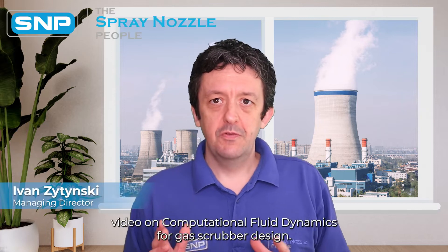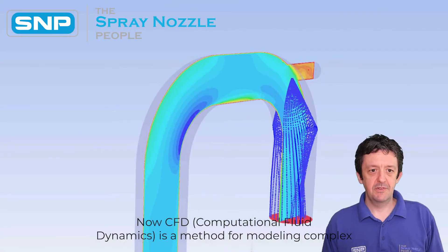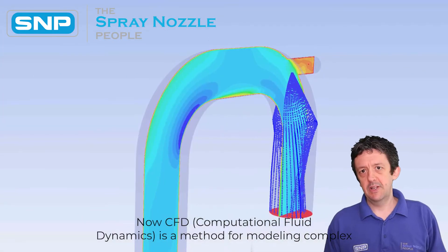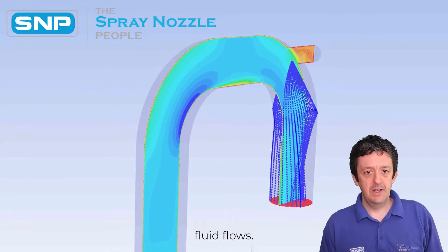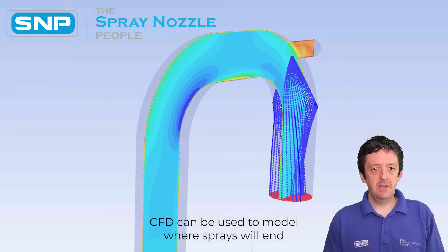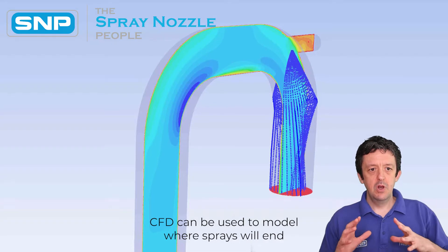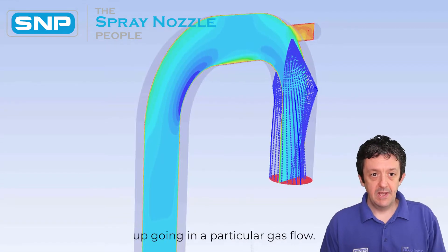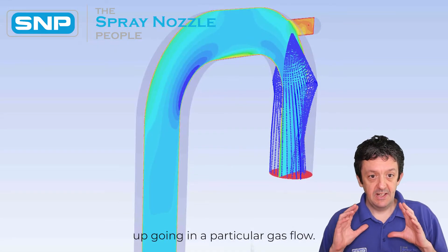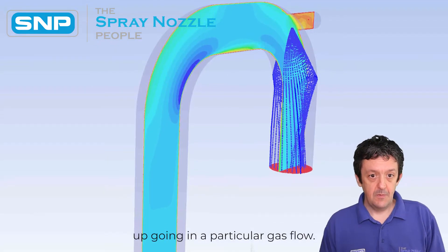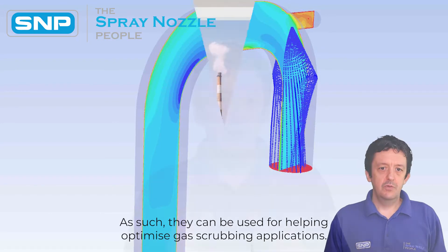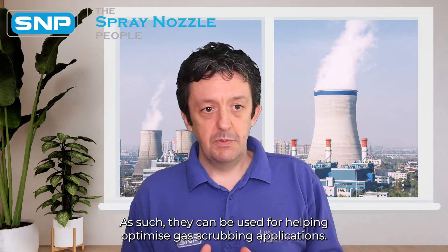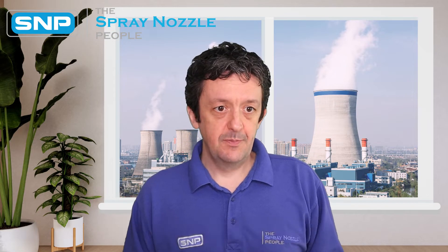This is a video on computational fluid dynamics for gas scrubber design. CFD, computational fluid dynamics, is a method for modelling complex fluid flows. CFD can be used to model where sprays will end up going in a particular gas flow, and as such, they can be used for helping optimise gas scrubbing applications.